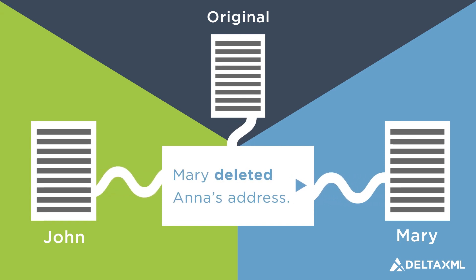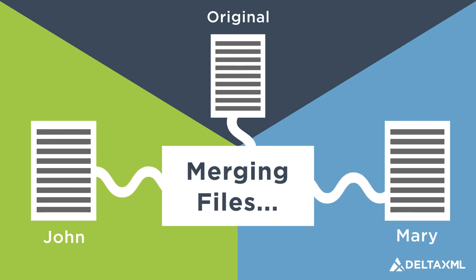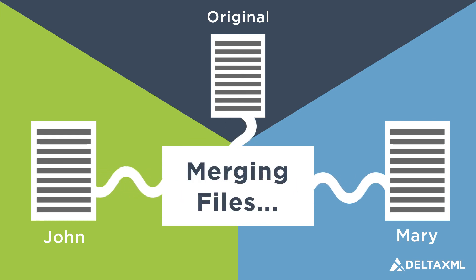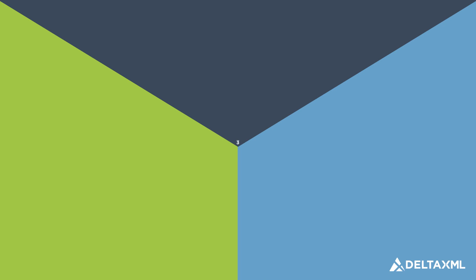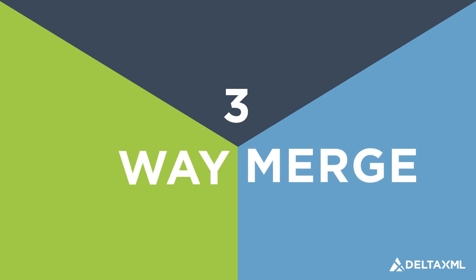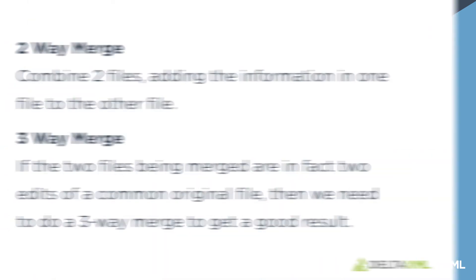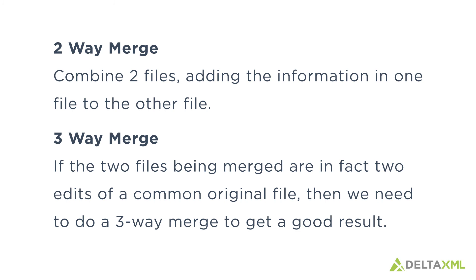In this situation we can only get a good merge result using all three files, and this is known as a three-way merge. So a two-way merge is to combine two files, adding the information in one file to the other. If the two files being merged are in fact two edits of a common original file, then we need to do a three-way merge to get a good result.